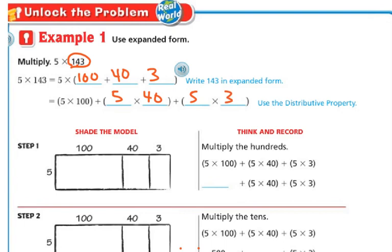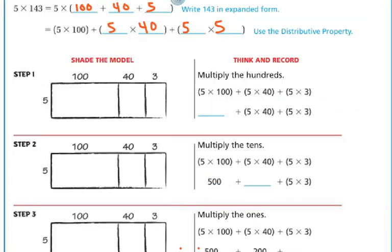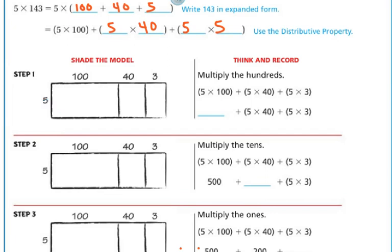This is using the distributive model. So I did 5 times 100, 5 times 40, and 5 times 3. If I draw the boxes like I did yesterday, I could do 5 times 100 in one box, then 5 times 40, and then 5 times 3 in the next box.